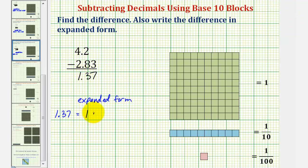So again we have one plus three tenths plus seven hundredths for the expanded form of our difference. I hope you found this helpful.